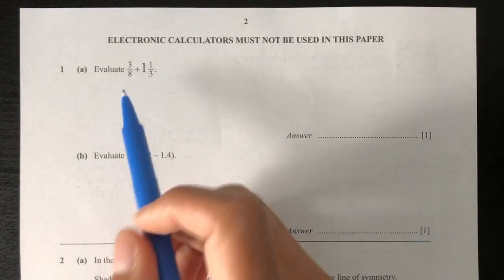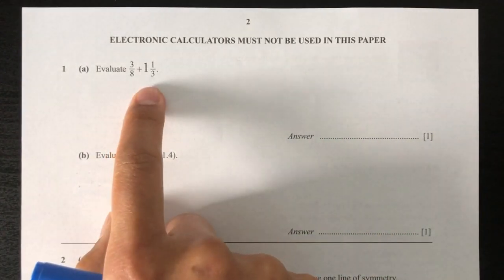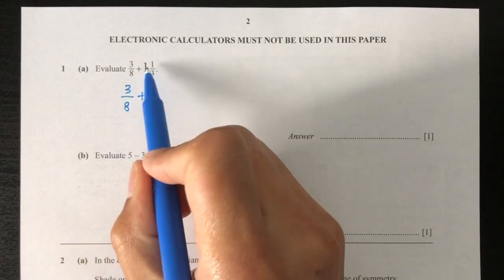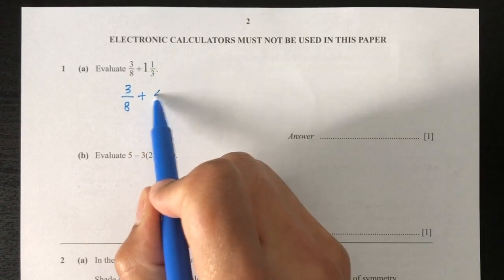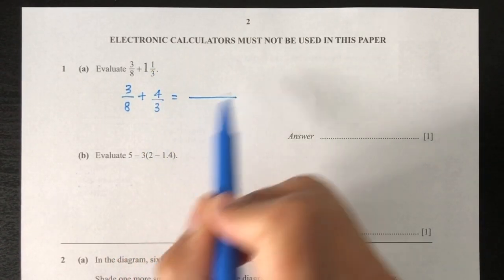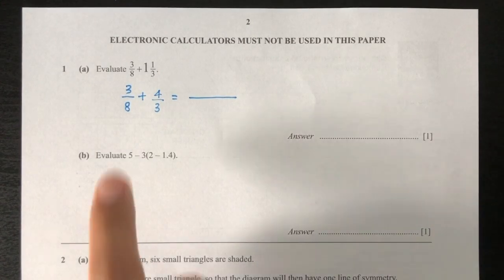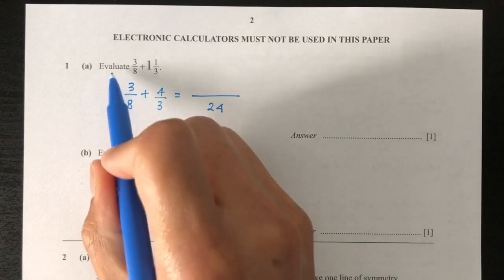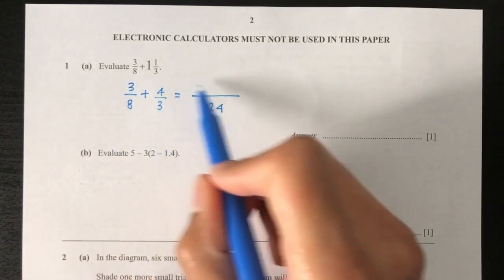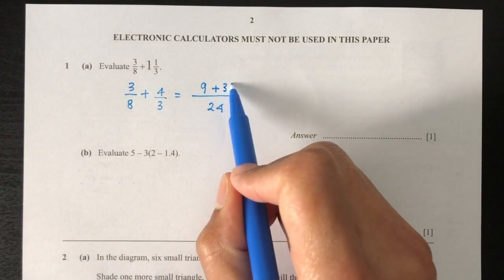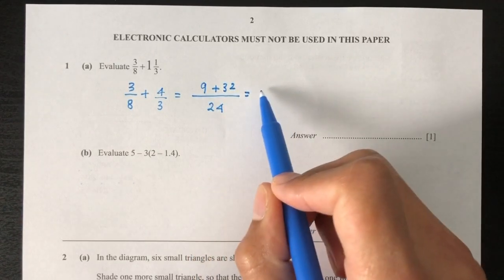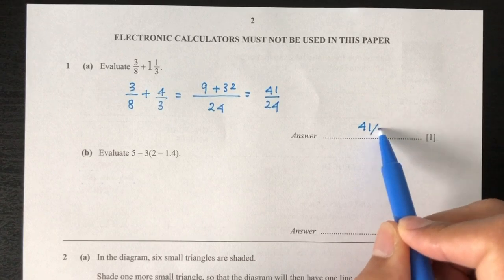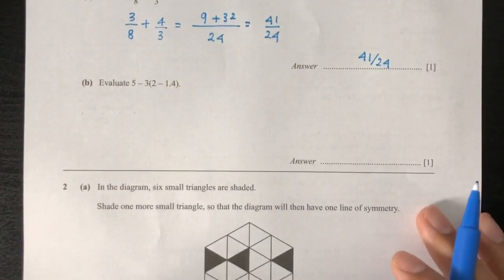Here we have to evaluate these two fractions. Step 1: we have a mixed number, so we have to expand it. So you will have 3 over 8 plus — 1 times 3 plus 1 is 4 over 3. Now the bases are different, so we find the LCM by multiplying each other, that will become 24. Then we cross multiply: 3 times 3 will be 9, plus 32, and that will be 41 over 24. You can leave your answer like that or write it as a mixed number. That will be part A.